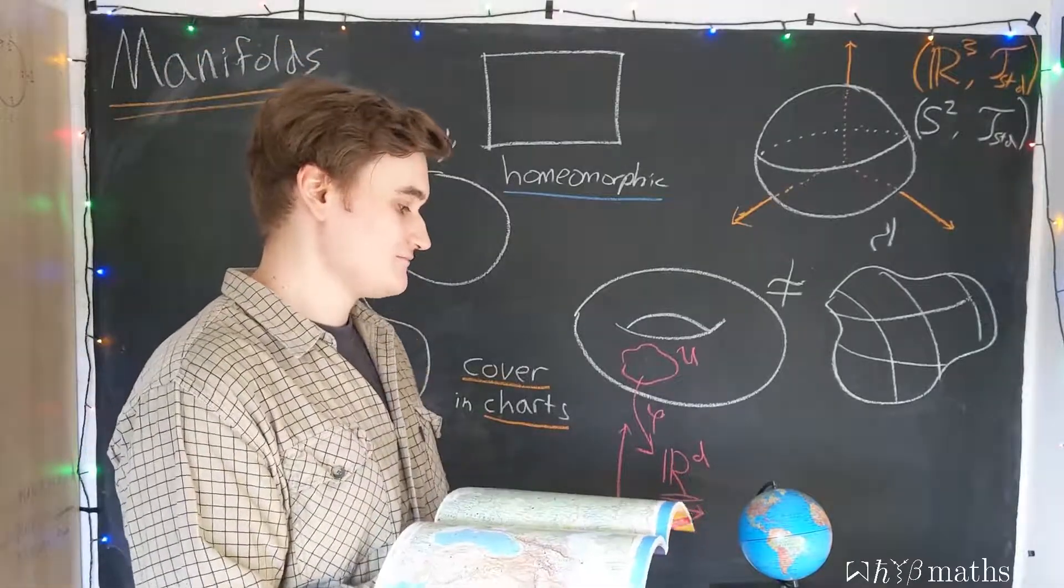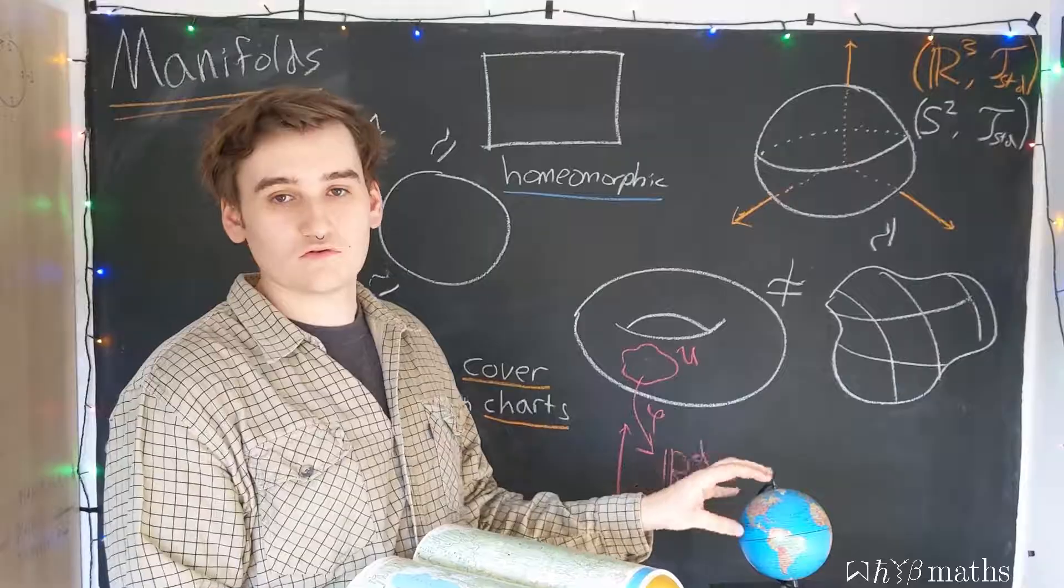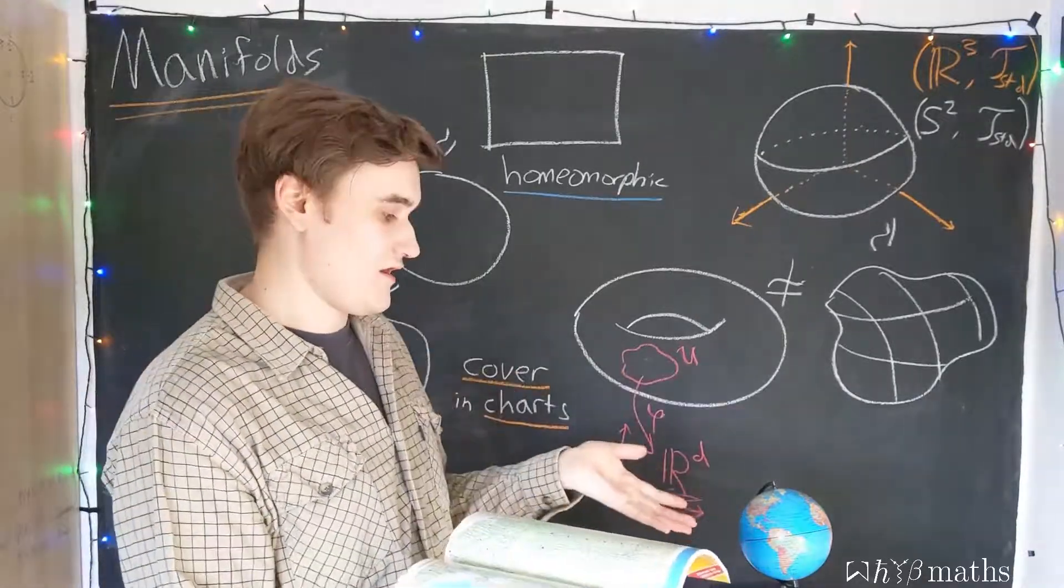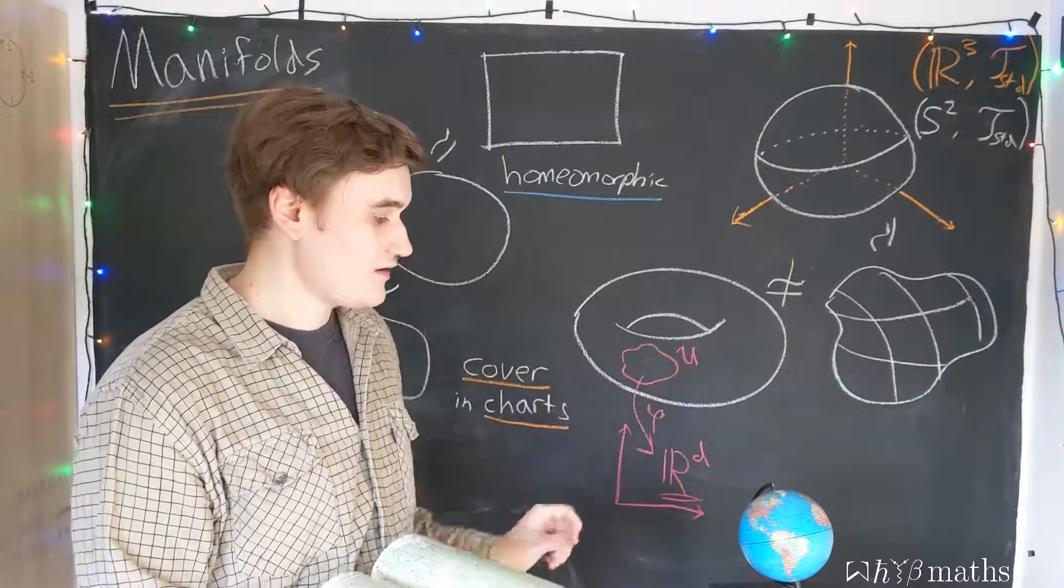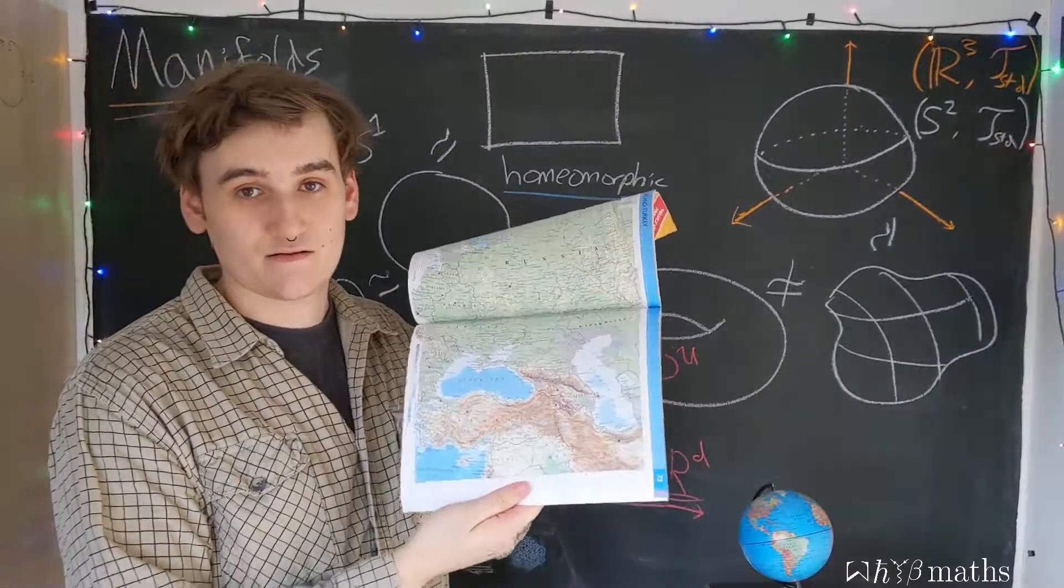So, this is, again, emphasizing that locally, small regions of what might globally be not R2. The sphere is obviously not R2. But locally on the sphere, we can represent it as a portion of R2.